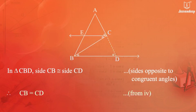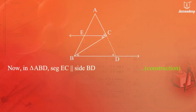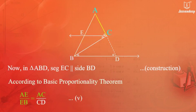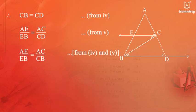Now, in triangle ABD, segment EC is parallel to side BD by construction. According to the Basic Proportionality Theorem, we get AE upon EB equals AC upon CD (Equation 5). As CB equals CD by Equation 4, we can replace CD by CB in Equation 5. We get AE upon EB equals AC upon CB.